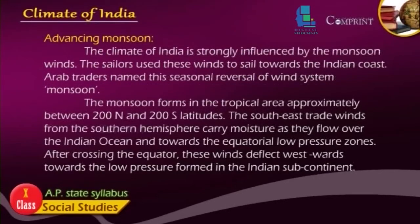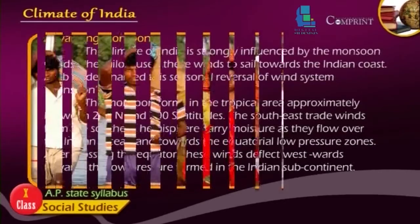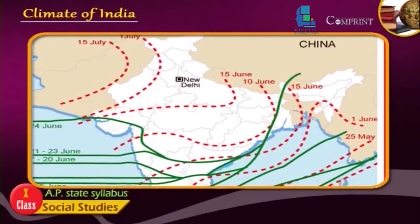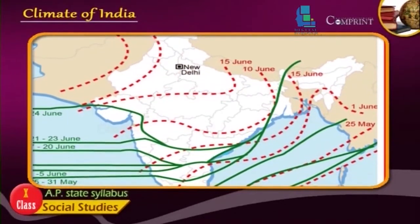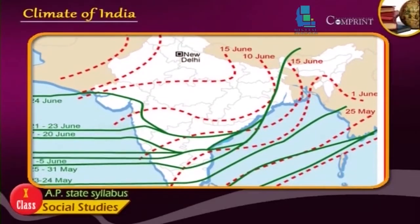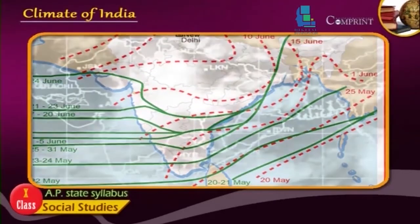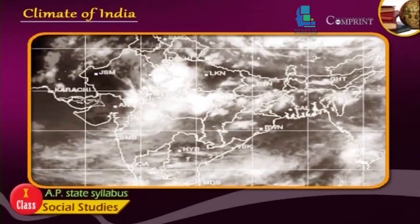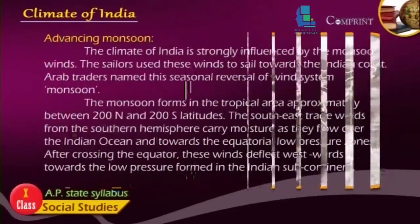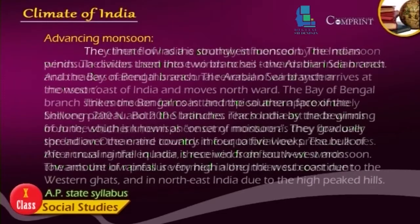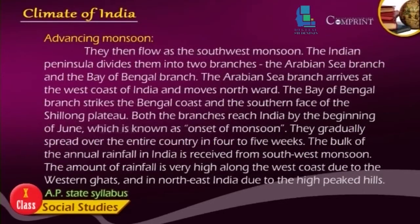The climate of India is strongly influenced by the monsoon winds. The sailors used these winds to sail towards the Indian coast. Arab traders named this season 'monsoon,' referring to the reversal of wind system. The monsoon forms in the tropical area approximately between 20 degrees north and 20 degrees south latitudes. The southeast trade winds from the southern hemisphere carry moisture as they flow over the Indian Ocean towards the equatorial low pressure zones. After crossing the equator, these winds deflect westwards towards the low pressure formed in the Indian subcontinent and flow as the southwest monsoon.